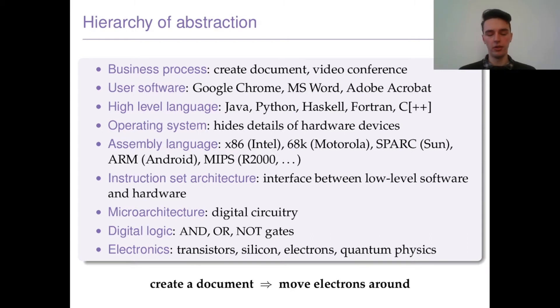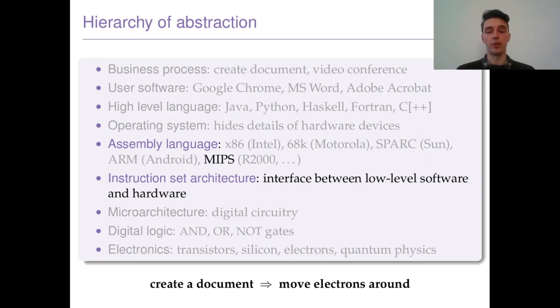The idea is that we want to go from a simple requirement like making a document all the way down to moving electrons about. We've already had a look at the bottom few, and this semester we'll be focusing on the assembly language, for which we'll be using MIPS in a 32-bit implementation, and instruction set architecture.